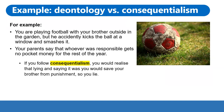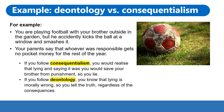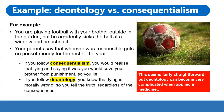Now, if you followed consequentialism, you would realise that lying and saying it was you would save your brother from punishment, and therefore you would lie. But if you follow deontology, you would know that lying is morally wrong. We know from that universal set of rules that lying is wrong, so you wouldn't lie — you would tell the truth regardless of the consequences.